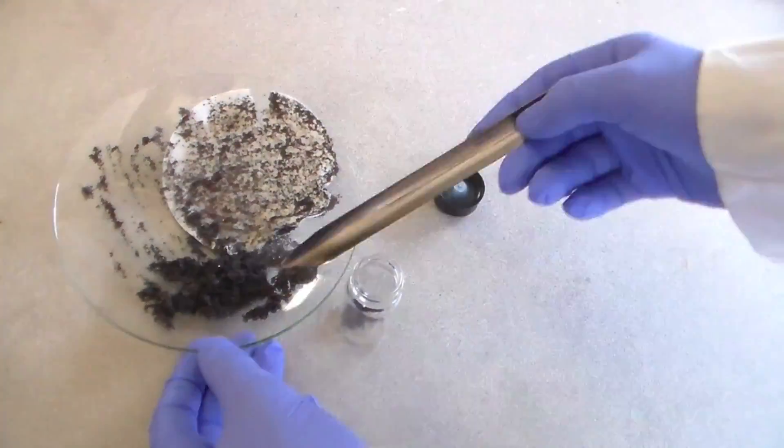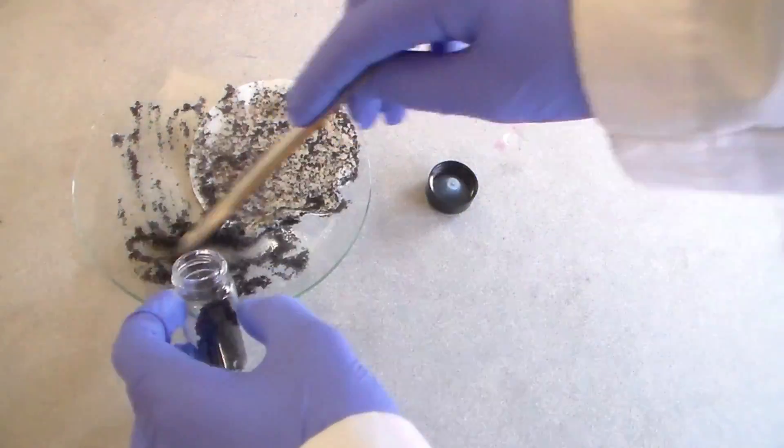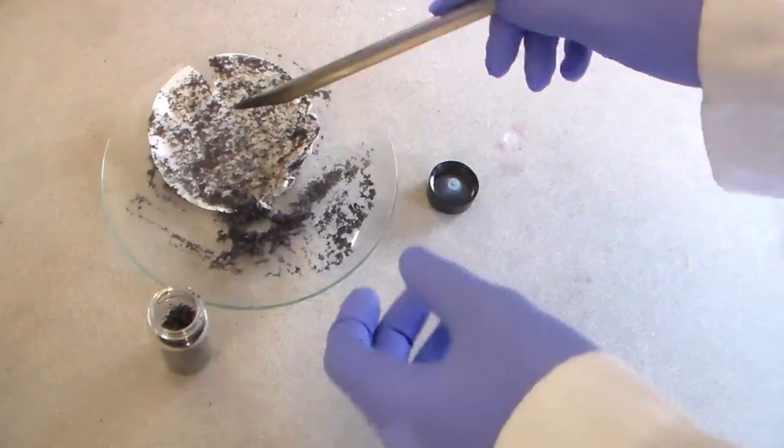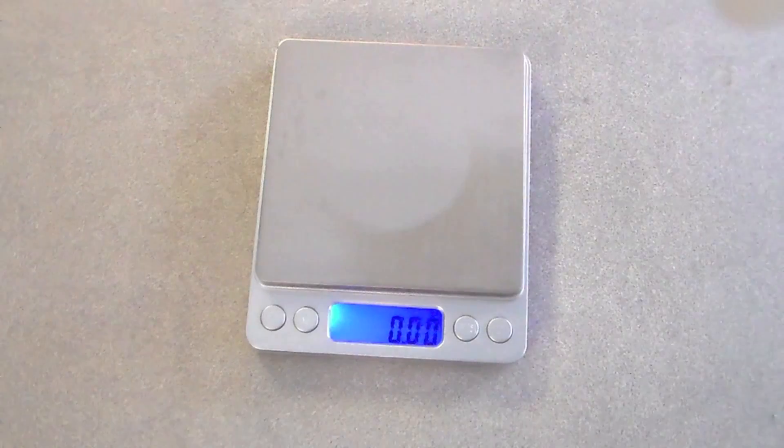After letting the solids dry, I transferred them to a vial. It was at this point that I realized that I had forgotten to weigh the product and determine percent yield.